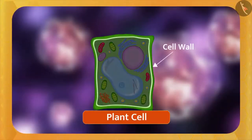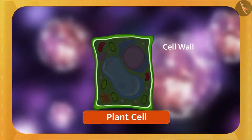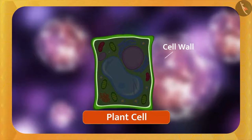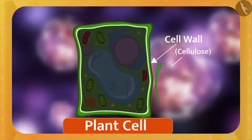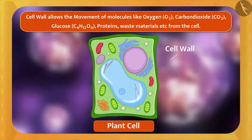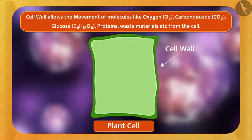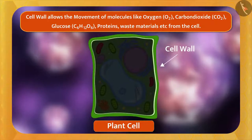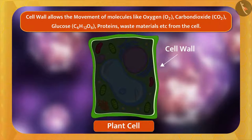The cell wall is the outermost layer and is present only in the plant cell — it surrounds the entire plant cell. Plants are a bit rigid and complex, and this is because of the cell wall, as it is made up of a complex substance called cellulose. It is very thick and rigid and provides structural support to the plant, maintaining the safety and structure of the cell. It is a permeable membrane — it allows small particles to go in or out, and no organic chemical reaction takes place in it.